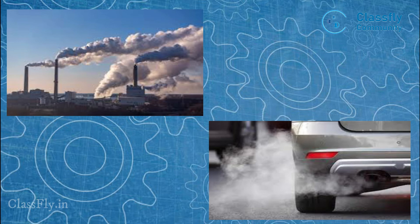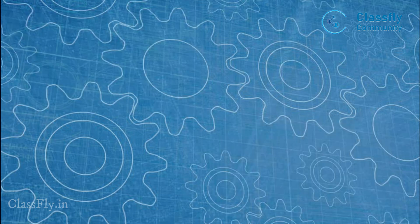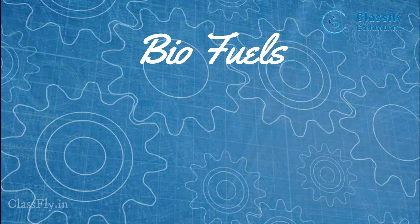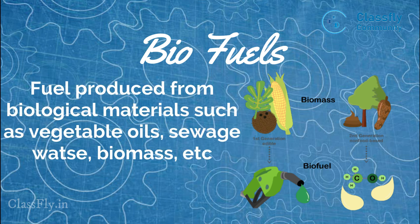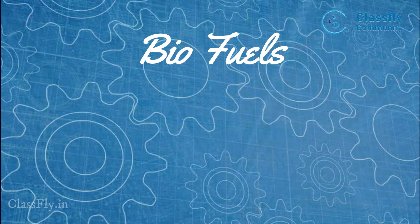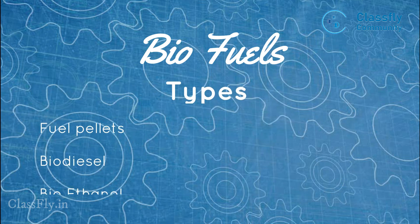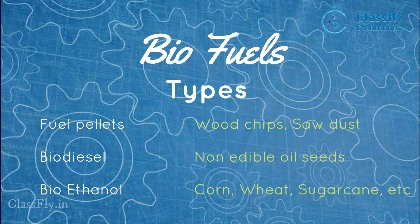Hence, switching to a cleaner fuel is a necessary task, and biofuels are the answer. Biofuels are fuels produced from biological materials such as vegetable oils, sewage waste, and biomass. They are a type of clean fuel which does not cause pollution and can be produced in abundant quantities. Types of biofuels include fuel pellets made from wood chips or sawdust, biodiesels made from non-edible seeds such as mustard, and bioethanol — a famous substitute for fossil fuels in the automobile industry — made from corn, wheat, or sugar cane.